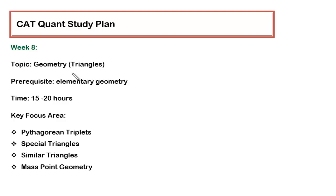Before targeting geometry in this particular week, the prerequisite is that you should have an elementary idea of geometry. When I say elementary idea, I mean the very basic things. For example, the sum of all three angles in a triangle is 180 degrees. Very elementary theorems you should have an idea of.